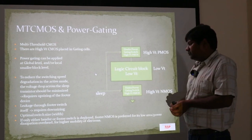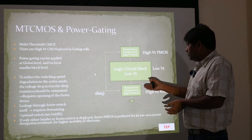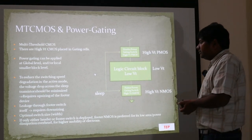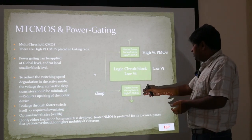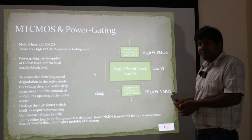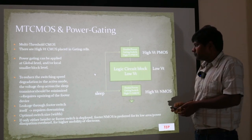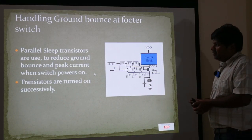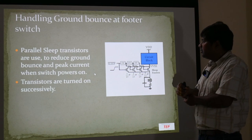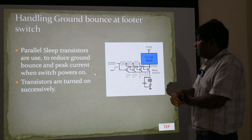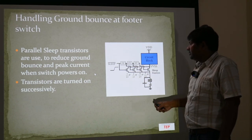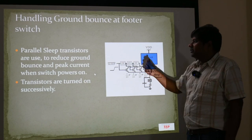If we want to use only one of the two switch types, NMOS is preferred due to its low area and power dissipation overhead, and because of the higher mobility of electrons, the NMOS footer switch is given preference. With header and footer switches there were issues of ground oscillations and ground bounce, so techniques were deployed using multiple parallel-connected switches that are sequentially turned on and off to reduce ground bounce.